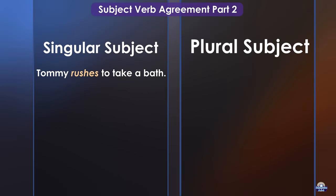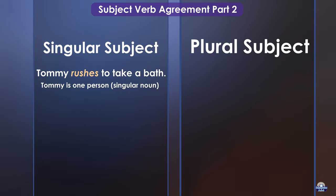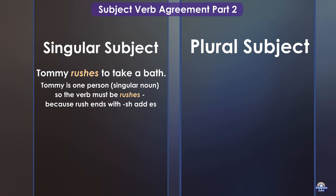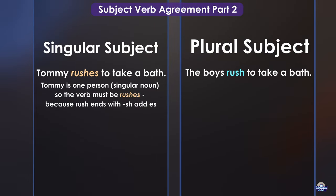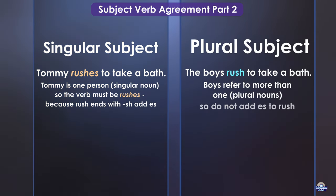Tommy rushes to take a bath. Tommy is one person, a singular noun, so the verb must be rushes. Because rush ends with SH, we add ES. The boys rush to take a bath. Boys refer to more than one — plural nouns — so do not add ES to rush.